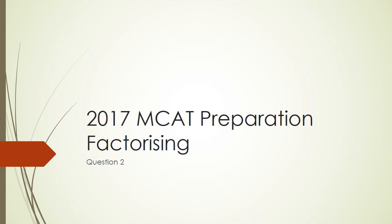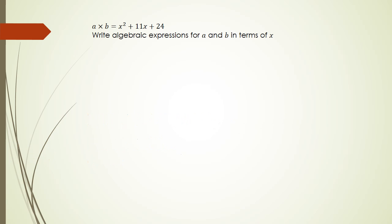Let's get started. The first question is: a times b equals x squared plus 11x plus 24 — write algebraic expressions for a and b in terms of x. Basically, it's asking how you write a quadratic as two things being multiplied together, so you're being asked to factorize.